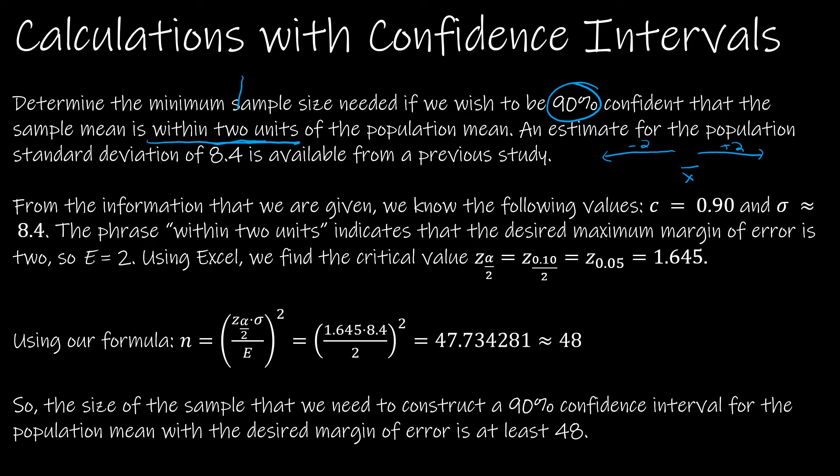Within 2 units means our population mean is going to be in the middle and 2 units to the right or 2 units to the left. And so hopefully we can recognize that this is our E value.